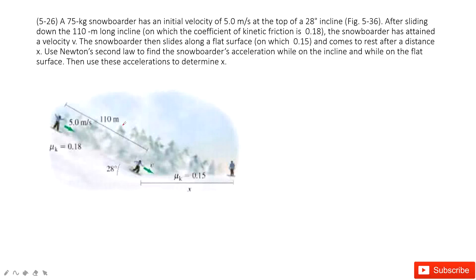We can see a person starts moving at 5 m/s along the slope with μk = 0.18. When he reaches this turning point, the velocity is v, and then he moves on the horizontal ground. Finally he stops at v = 0. The problem asks you to find the displacement along this horizontal ground.